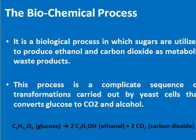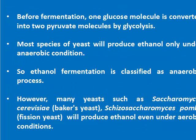It is a biological process in which sugars are utilized to produce ethanol and carbon dioxide as metabolic waste products. This process is a complicated sequence of transformations carried out by yeast cells that converts glucose to carbon dioxide and alcohol. Before fermentation, one glucose molecule is converted into two pyruvate molecules by glycolysis, which is the first level of aerobic respiration. Most species of yeast will produce ethanol only under anaerobic conditions, so ethanol fermentation is classified as an anaerobic process.